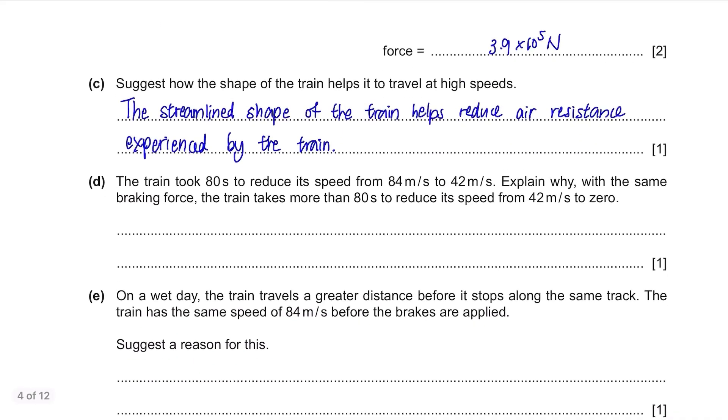Part D. The train took 80 seconds to reduce its speed from 84 m per second to 42 m per second. Explain why with the same braking force the train takes more than 80 seconds to reduce its speed from 42 m per second to 0. So why does it take longer to slow down if you are travelling at a lower speed? This can be a tricky question. Well, it's because when the train is moving at a slower speed, there is less air resistance against it. This time, you're trying to reduce your speed so the higher the air resistance, the easier it is for you to slow down. But at lower speeds, there is obviously less air resistance so you need more time to reduce the same amount of speed.